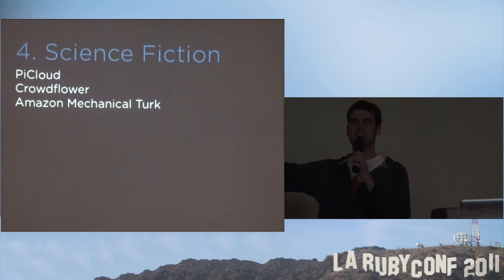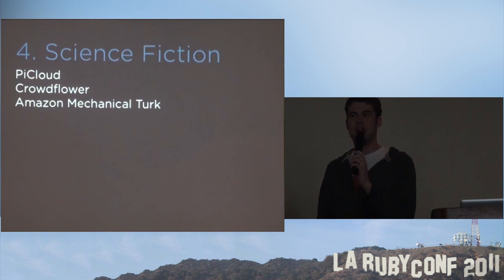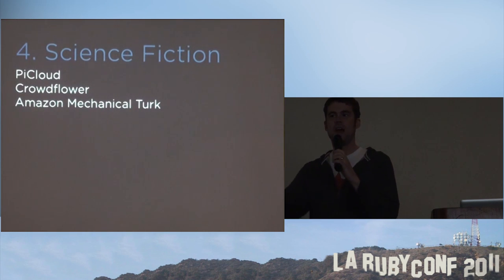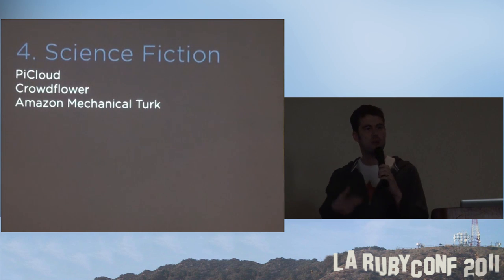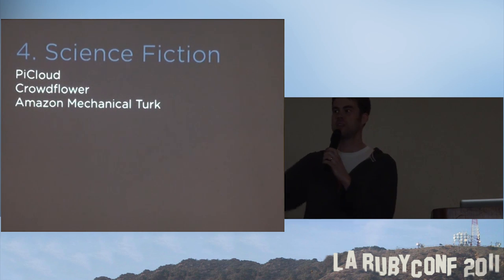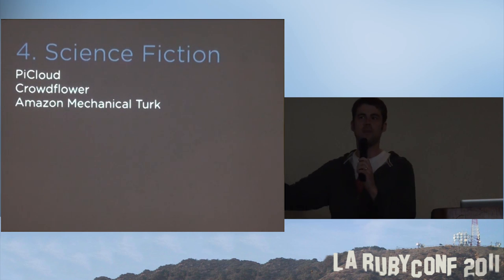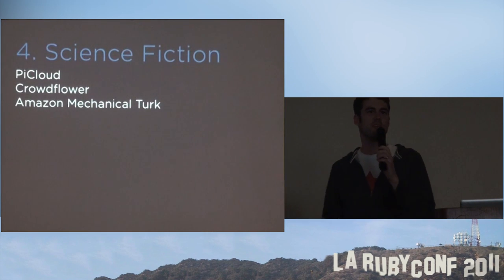The last group I call sci-fi APIs — these are things that are kind of crazy. PyCloud is like an API for Python processing in the cloud. You include it in your Python application and execute it, and it actually gets run in the cloud — so if you have a massively parallelizable problem, you can run it locally and it executes in the cloud. Amazon Mechanical Turk and CrowdFlower are an API to people, which really sounds like a Philip K. Dick story.